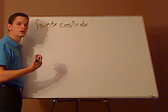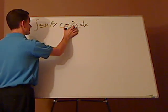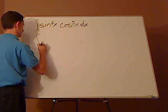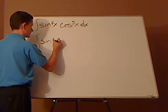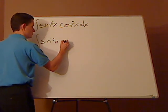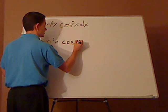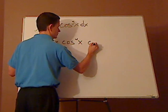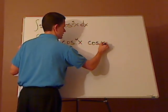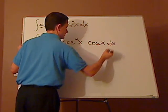Now, what you're going to do is you're going to split this apart. So sine to the 6th x cosine to the 4th x times cosine x dx.